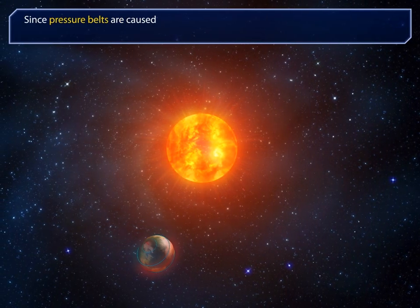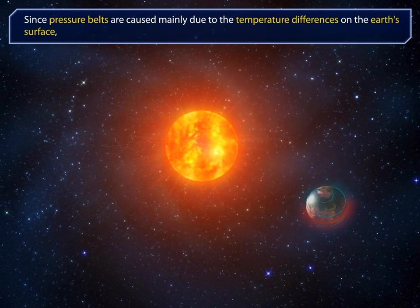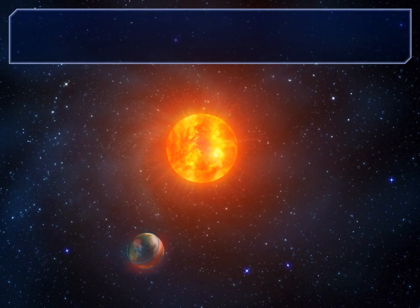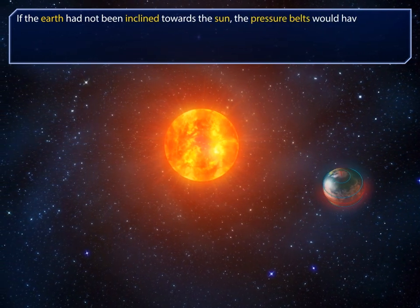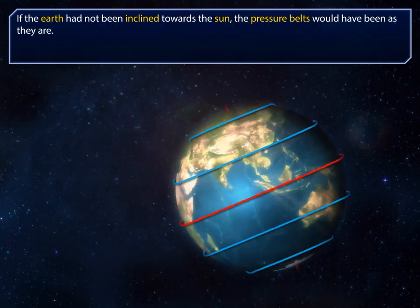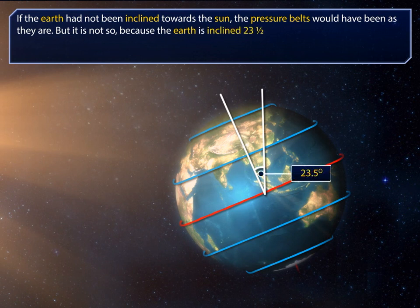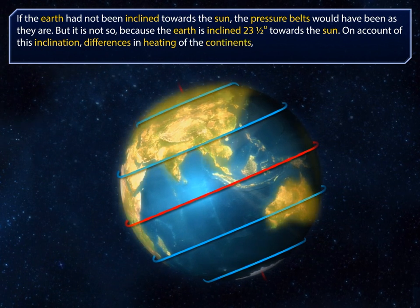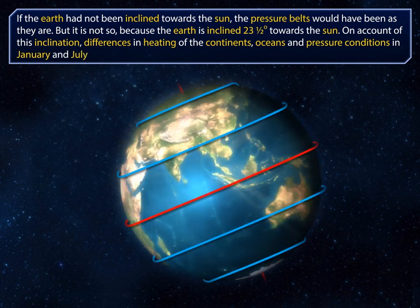Since pressure belts are caused mainly due to the temperature differences on the earth's surface, they move in response to the migration of the sun. If the earth had not been inclined towards the sun, the pressure belts would have remained fixed. But because the earth is inclined 23.5 degrees towards the sun, differences in heating of the continents, oceans, and pressure conditions in January and July vary greatly.